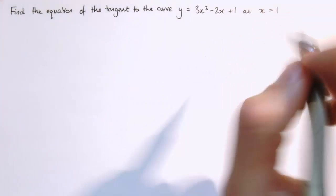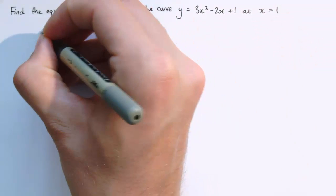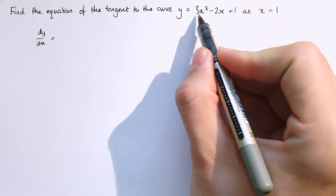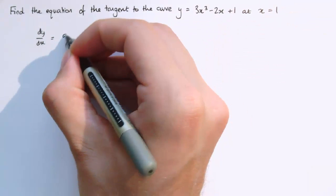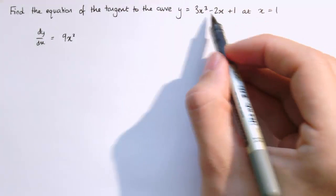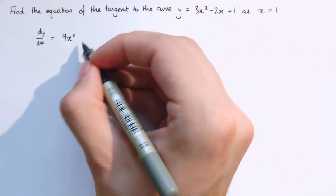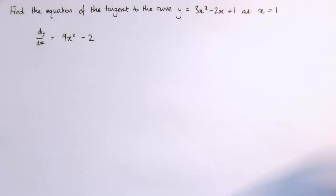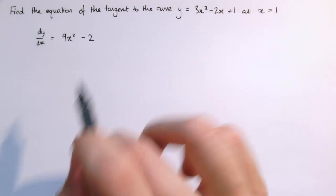Using the rules for differentiating these functions, dy/dx equals, well, differentiating 3x³ gives 9x², differentiating minus 2x gives minus 2, and differentiating 1 gives 0, so that just disappears.